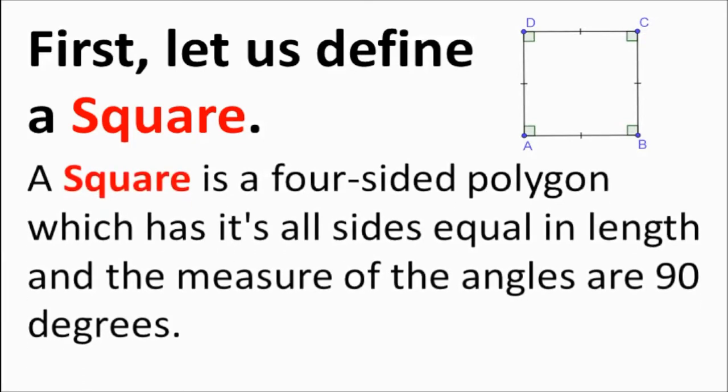A square is a four-sided polygon which has all sides equal in length and the measure of the angles are 90 degrees.